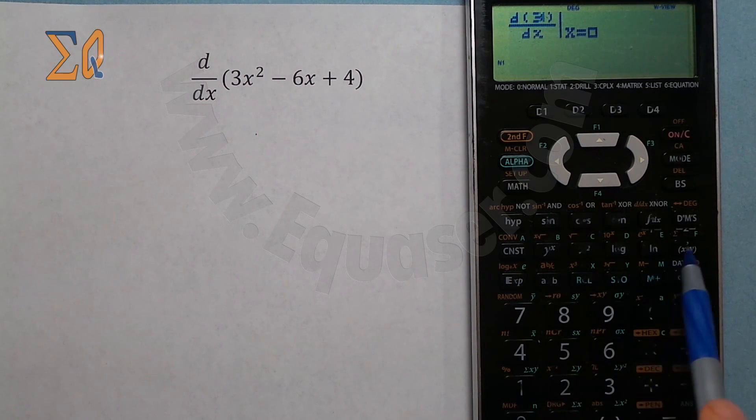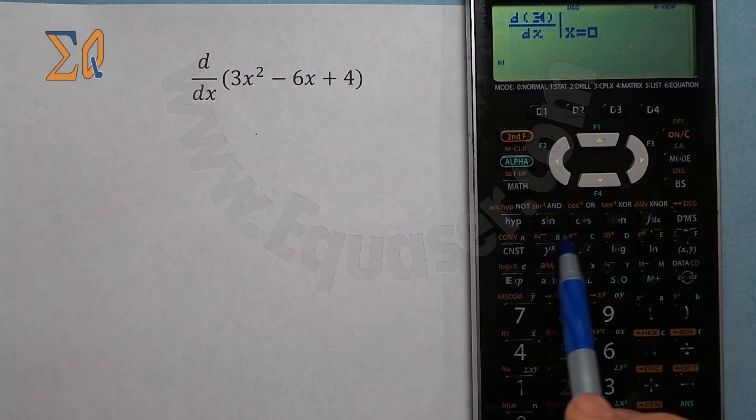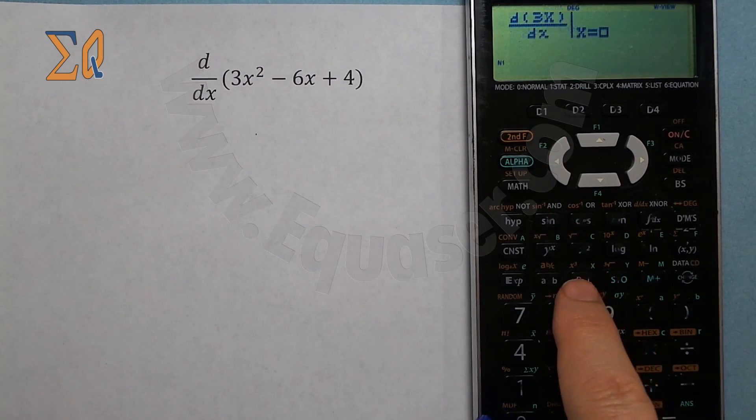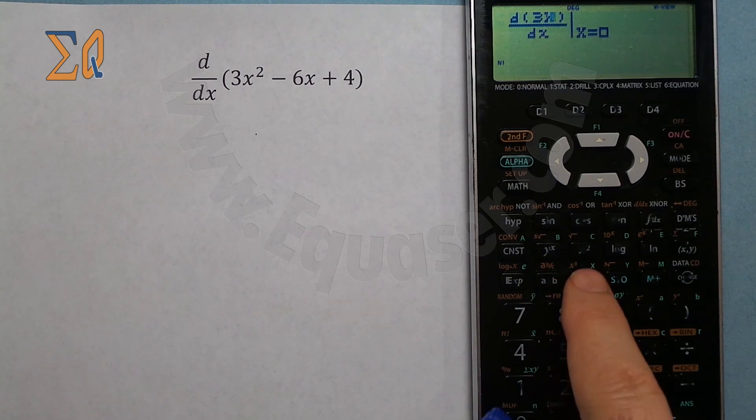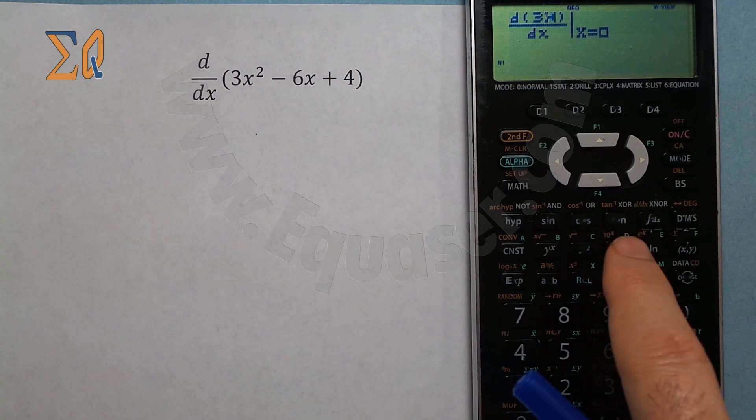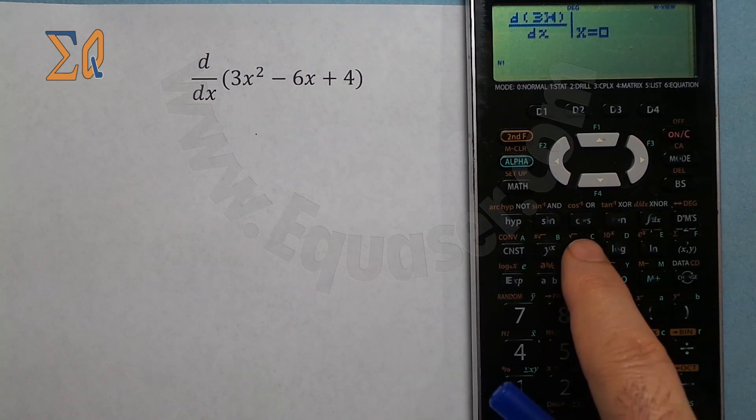To enter x and all these values that are bluish color, I press alpha and then x, then square.